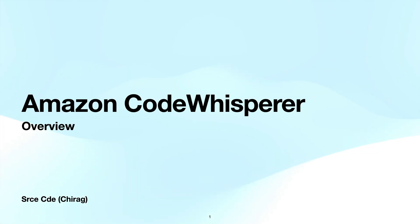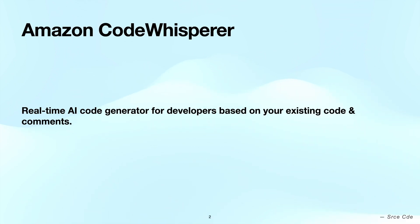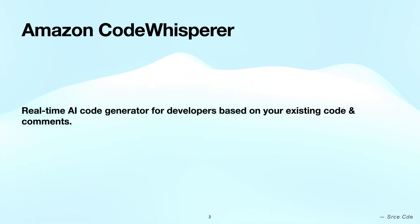Hello everyone, I am Chirag and welcome to this video. In this video I'm going to talk about a new Amazon service — Amazon CodeWhisperer. Amazon CodeWhisperer is an AI coding assistant for developers which generates real-time single line or full function code suggestions in your integrated development environment, helping you to quickly build software.